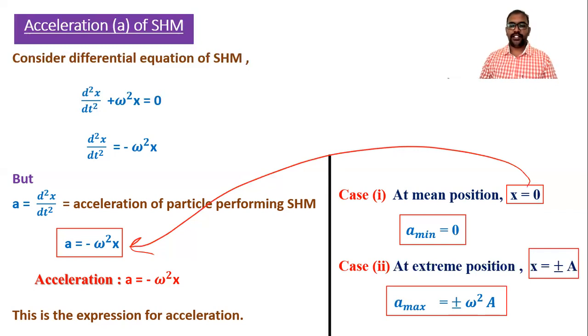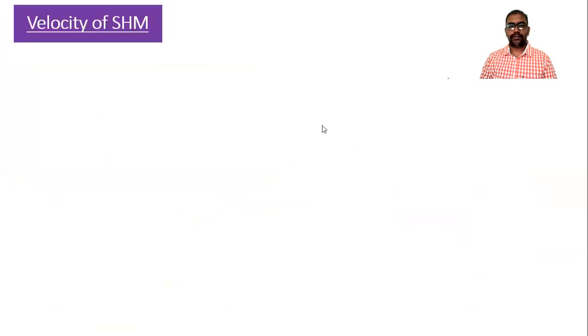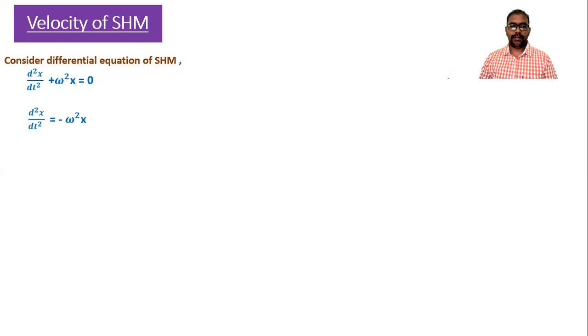After acceleration, we proceed to find velocity. We start with the previous article's acceleration formula. We consider the formula for acceleration and use it to obtain the formula for velocity. Writing the differential equation again: d²x/dt² = −ω²x.